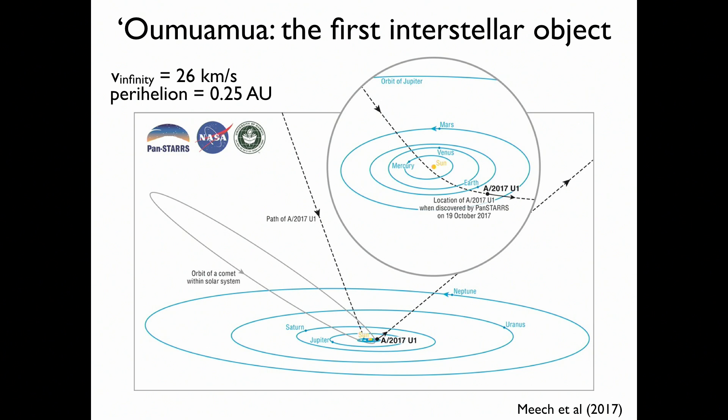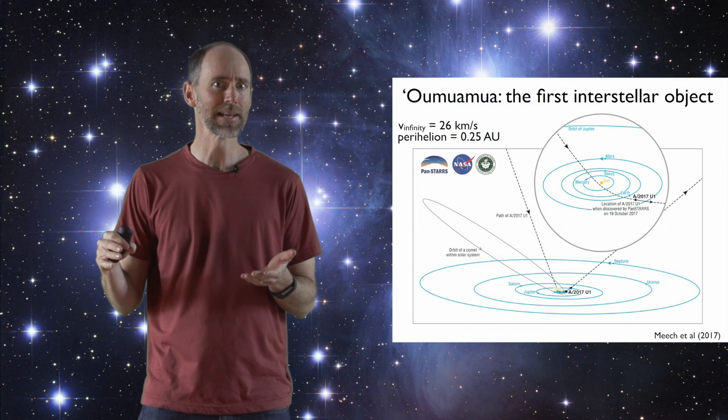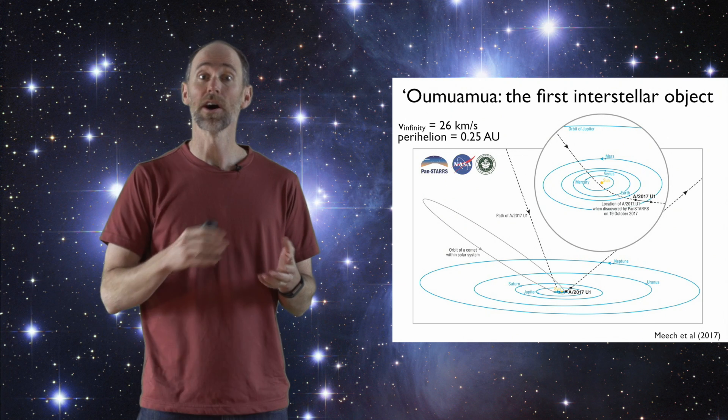And as you can see in this image, the orbits of the planets are shown in blue, and the trajectory of Oumuamua is shown in the dash line. You can see it comes from kind of above the plane of the planets, past close to the sun, and now it is on its way out.